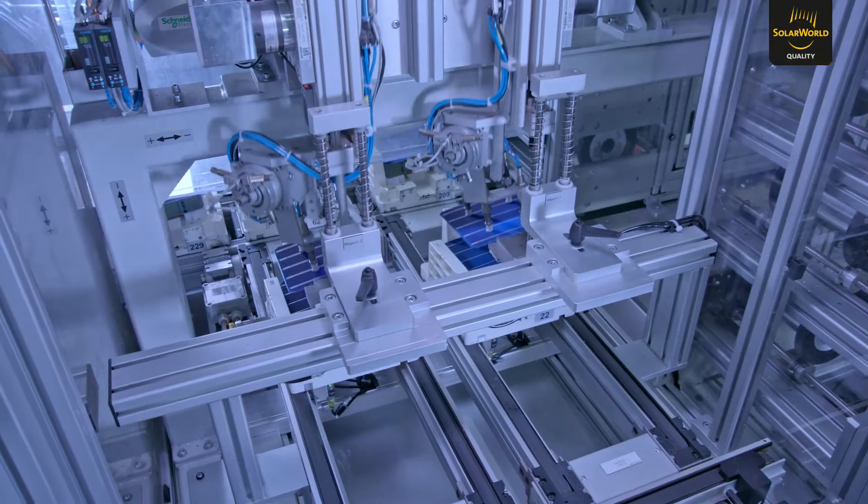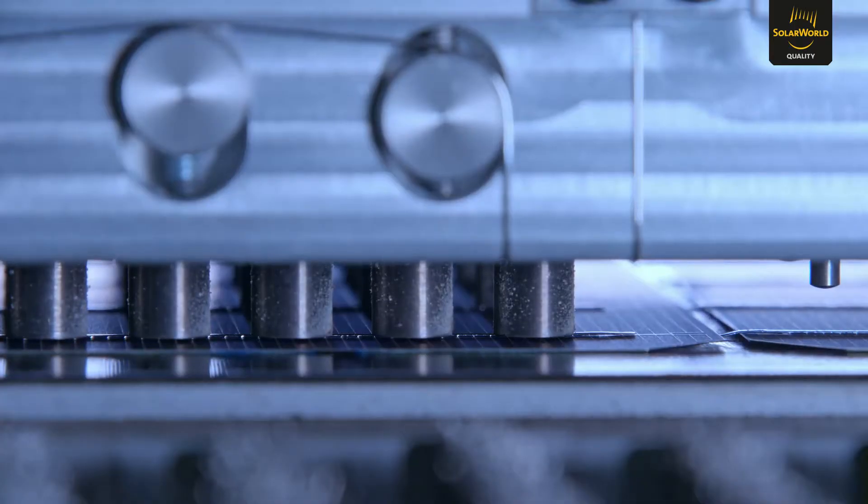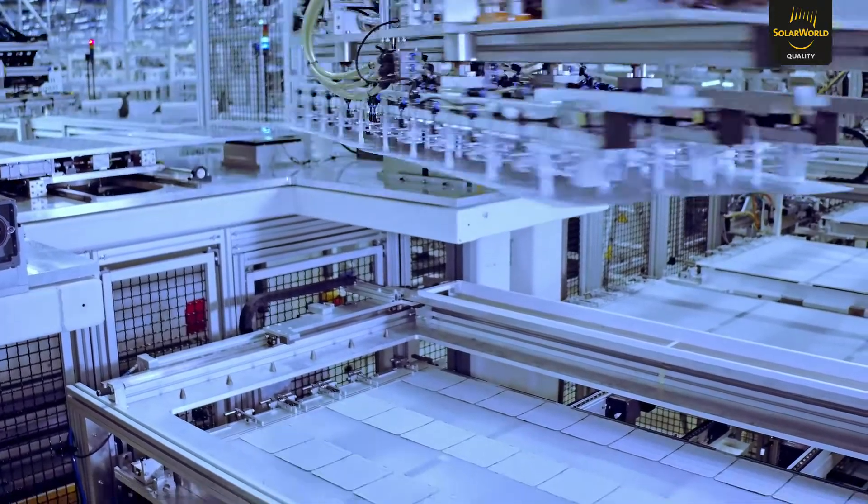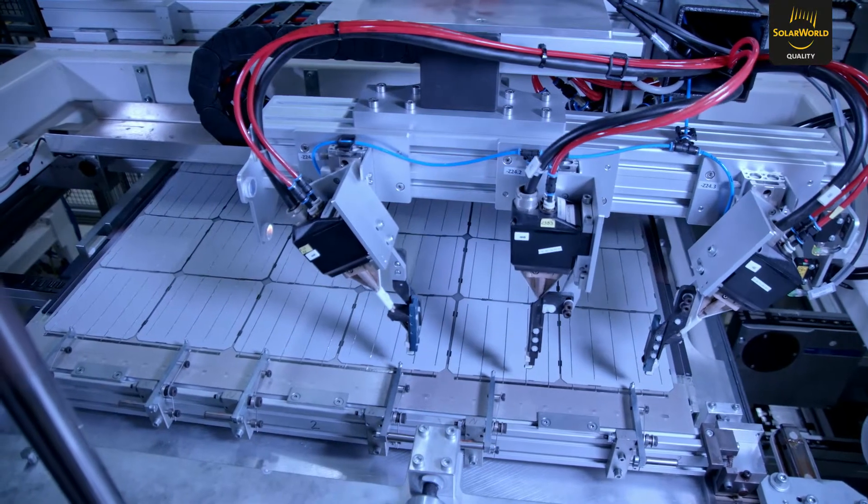After testing and sorting by performance and appearance, our solar cells arrive in the module production area. Ten identical cells are connected to form a string and soldered in series. A robot places six of these strings side by side according to their polarity. This creates a matrix of 60 solar cells.